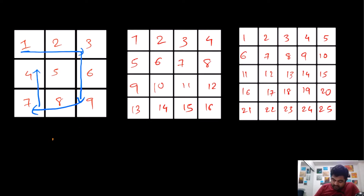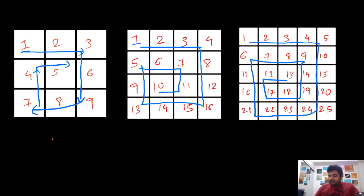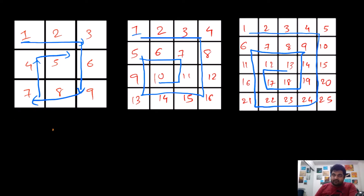Going back to the traversal: from position four, we come back to position five. From position five, you can realize there is no other direction it can go to, and that would be the end of the traversal. For the four-by-four matrix, we start at the initial position, go right, then downwards, then leftwards, then up until we hit a visited node, then right, down, left again. And this would be the traversal for the five-by-five matrix as well — it's pretty simple to understand.